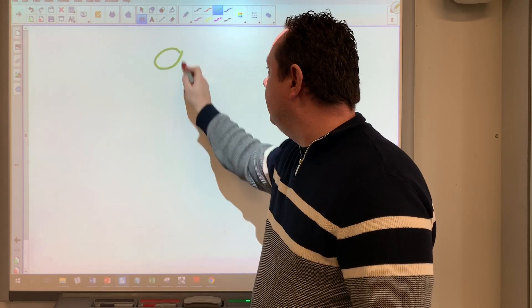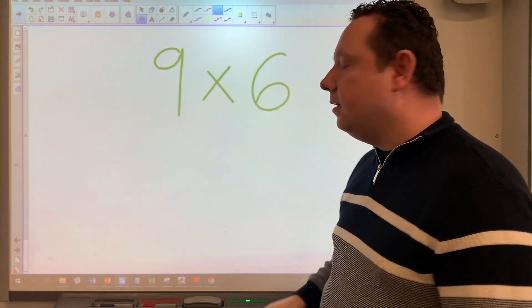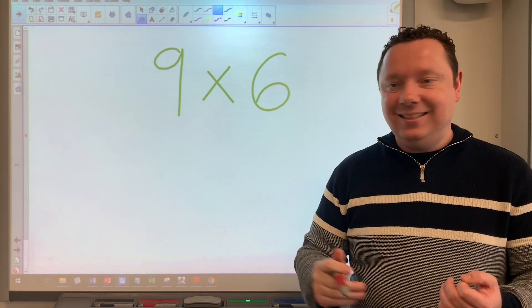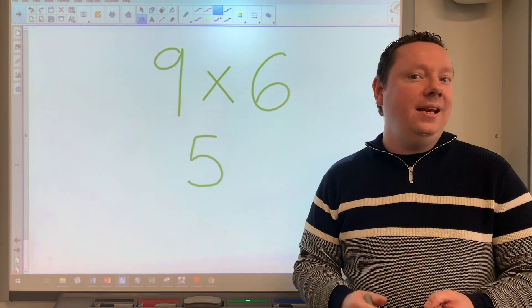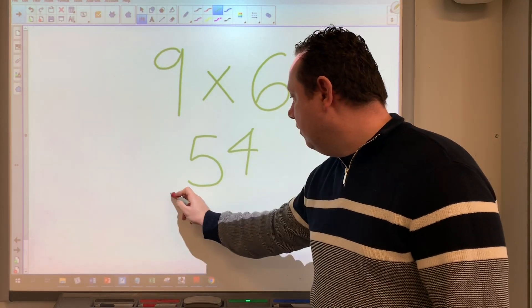9x6 - so I take one off of six, that gives me five. Five and four make nine, so the answer is 54.